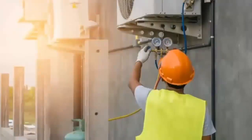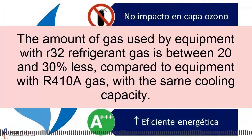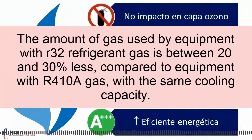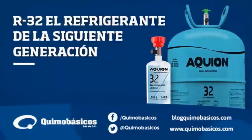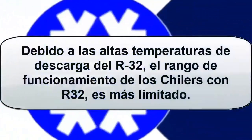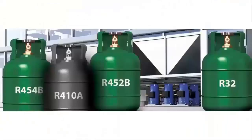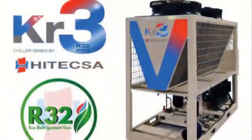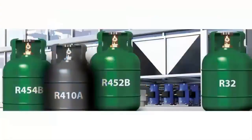7. The charge amount of R32 refrigerant is about 20% less compared with R410A. 8. R32 is a relatively inexpensive single-component refrigerant, which means it is easier to recycle. 9. Due to the high discharge temperatures of R32, the operating range of systems using R32 is more limited. 11. Manufacturers have selected R32 for their scroll compressor chillers because of its lower environmental impact.